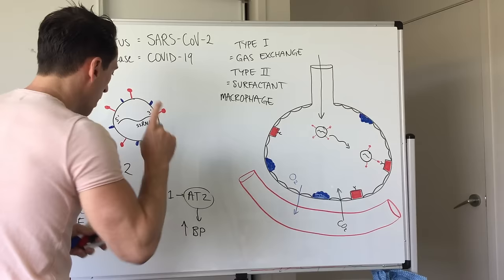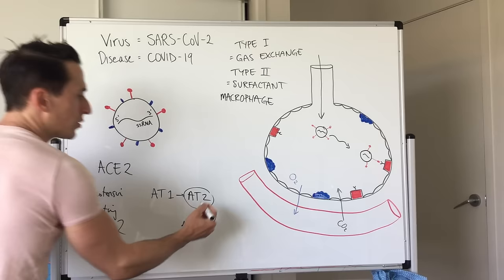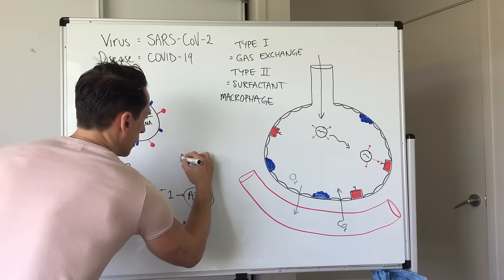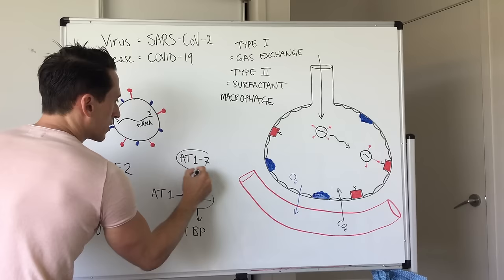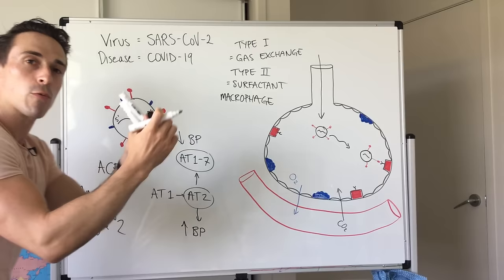But what ACE2 does is it turns angiotensin 2 into something called angiotensin 1-7. Now what angiotensin 1-7 does is the opposite. It drops blood pressure and it can do this by relaxing blood vessels.